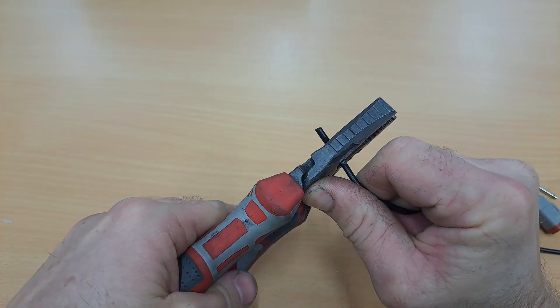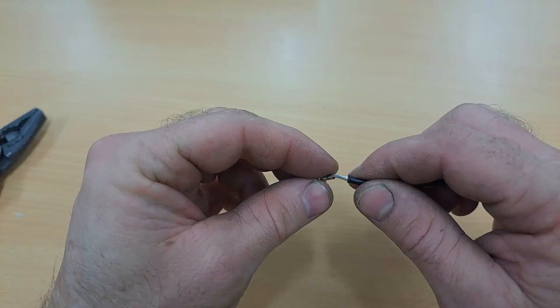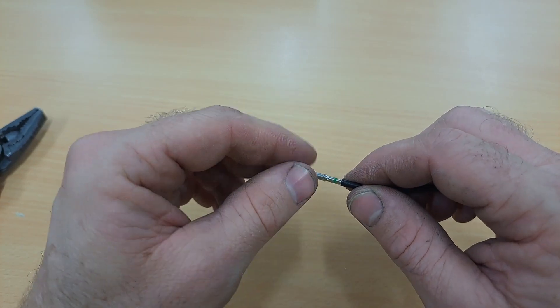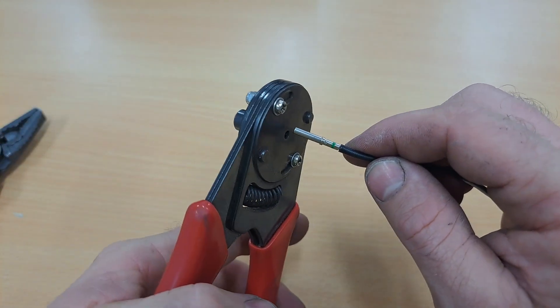Repeat with the black cable. Crimp the cable again just like you did before.